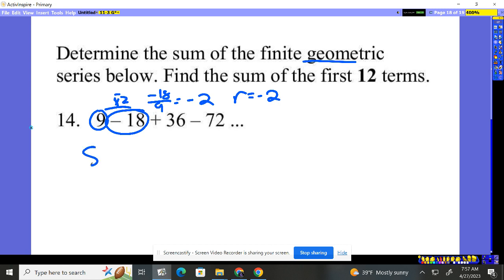So it says the sum of however many terms you want, in this case 12, is going to always be the first term times 1 minus r to the n, however many times you're doing it, divided by 1 minus r.